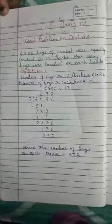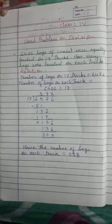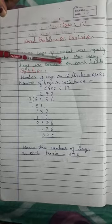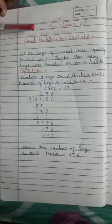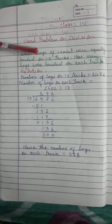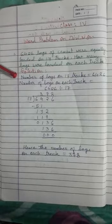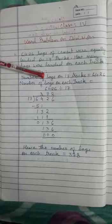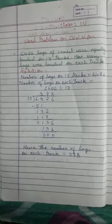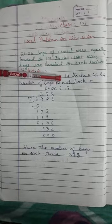Ok students, now some more examples. 6426 bags of cement were equally loaded on 17 trucks. How many bags were loaded on each truck? First of all, write statement. Number of bags on 17 trucks is equal to 6426. Number of bags on each truck is equal to 6426 divided by 17.